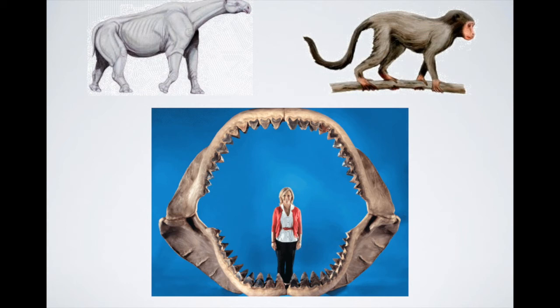The Isthmus of Panama formed because of the lowering sea levels, and it separated the Atlantic and Pacific Oceans. As isolation creates differing forms of evolution, the whales and other animals in the Atlantic Ocean evolved along one tract based on their environment, while those in the Pacific evolved along a different tract. This separation drove diversity and shows how small geographic changes had significant effects on the development of life.